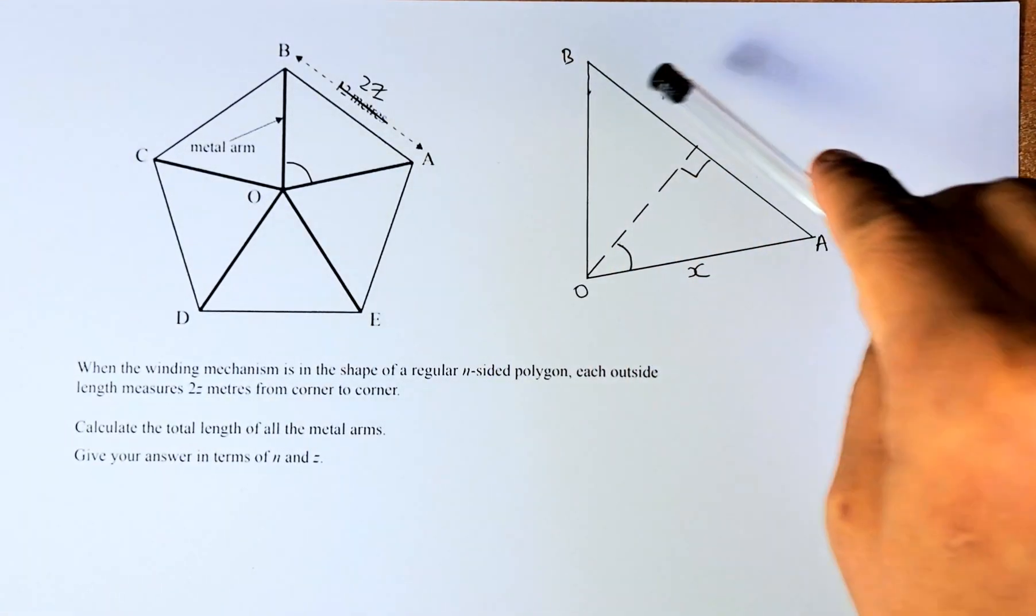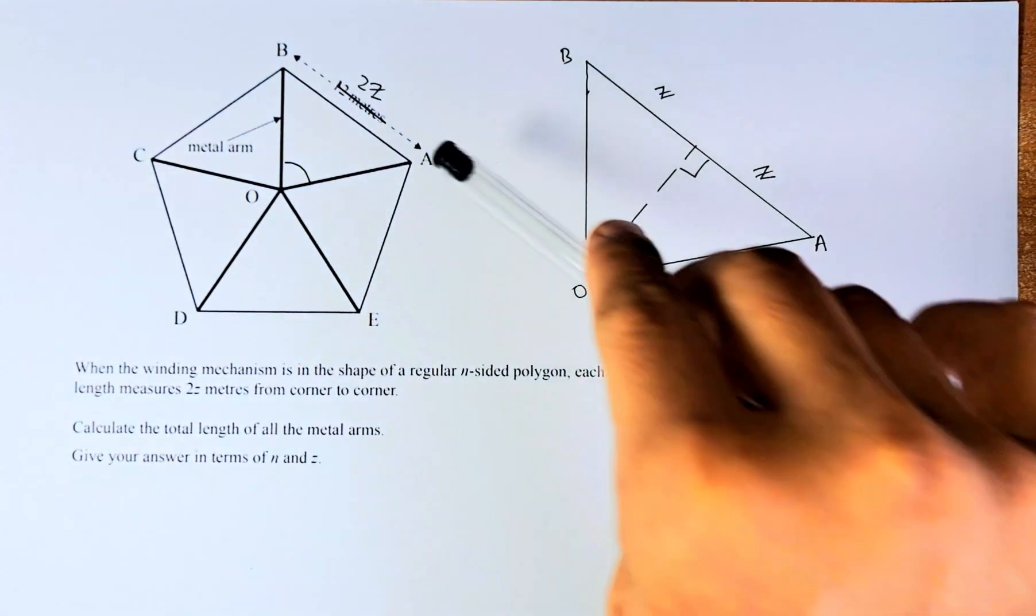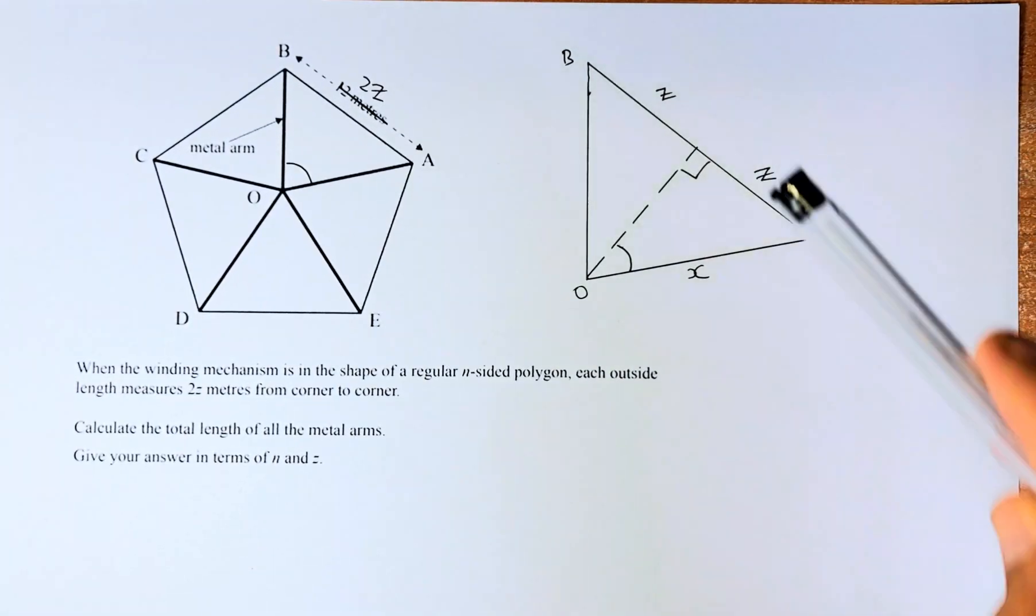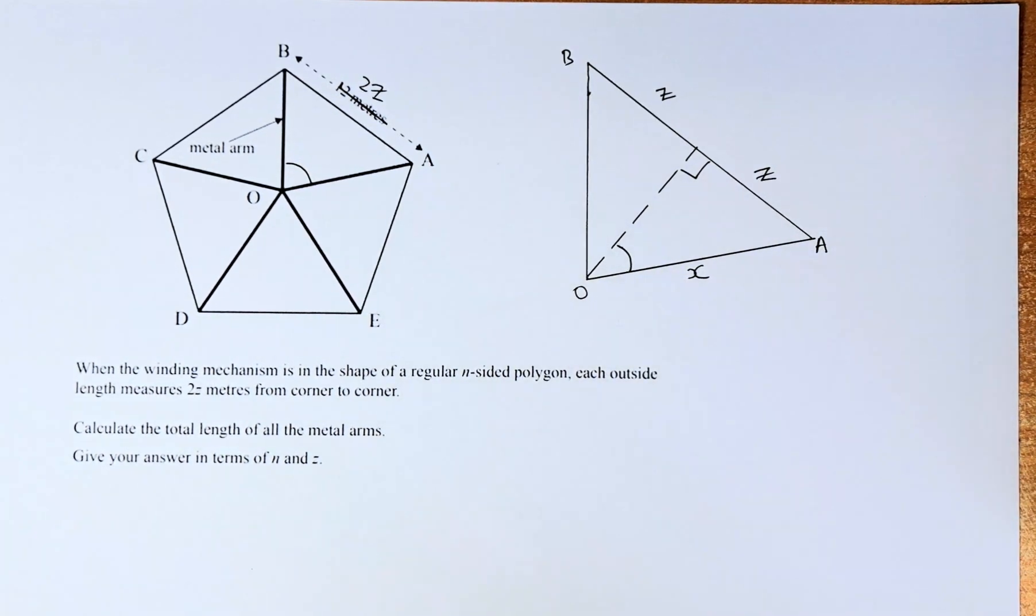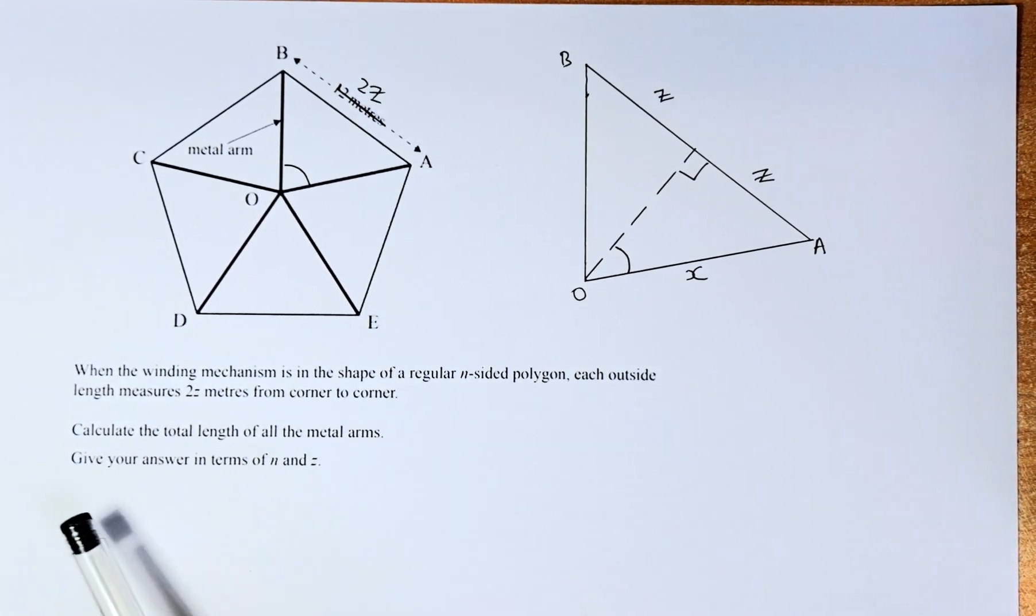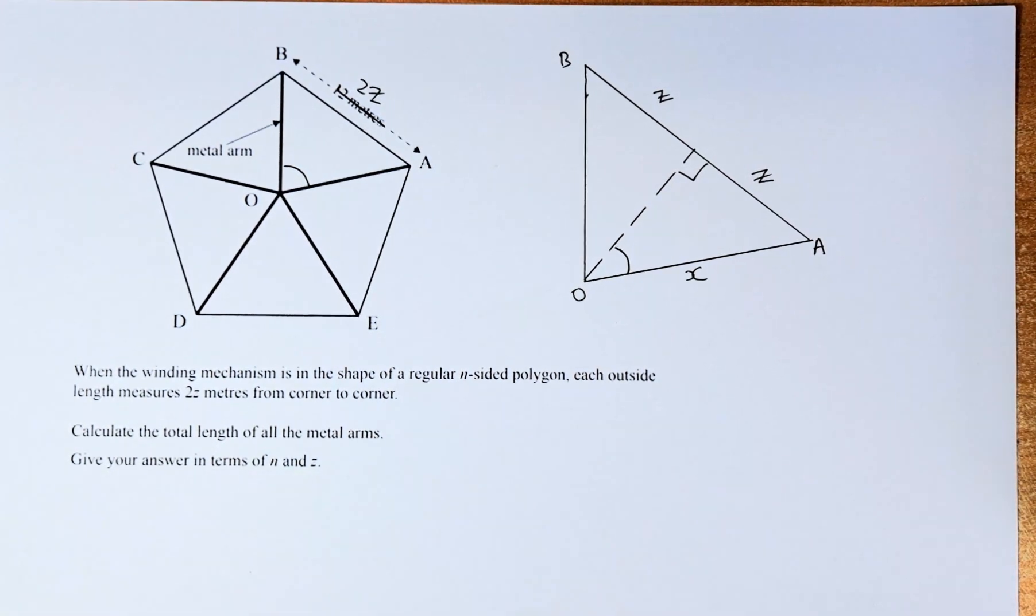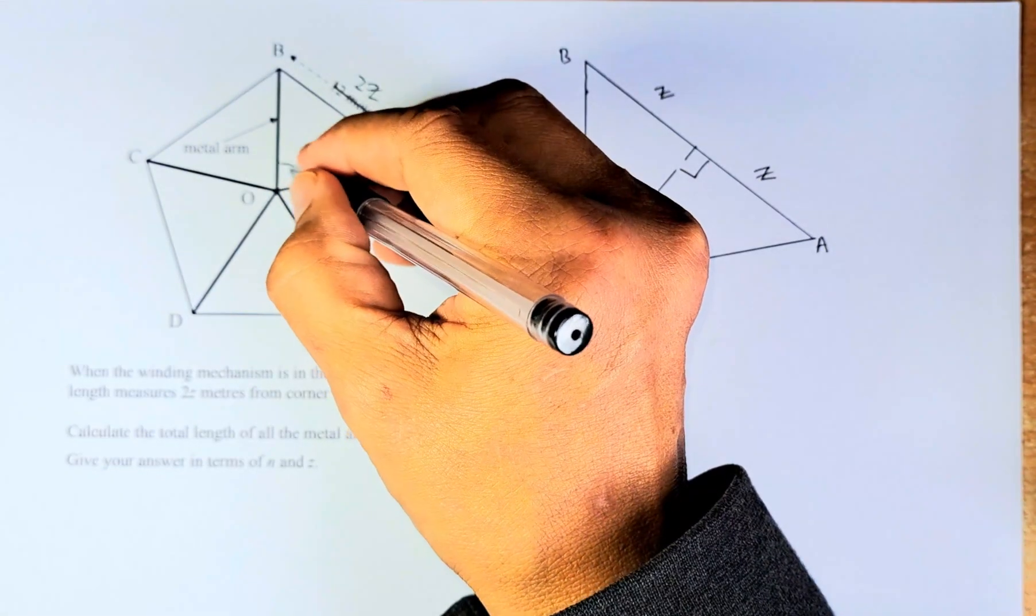Each side, outside measures 2Z. Instead of 12 previously, now it's 2Z. So if we break them down, the triangle BOA. 2Z, so half of that is Z and Z. And we have to find the length OA or we leave it as X. Calculate the total length of the metal arm. Give your answers in terms of N and Z.